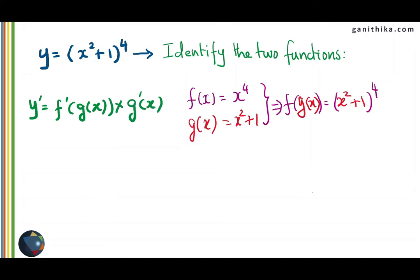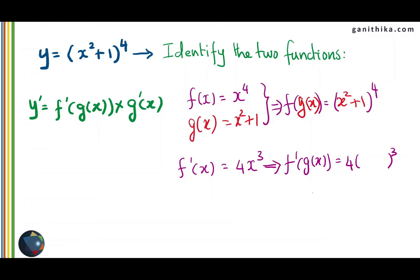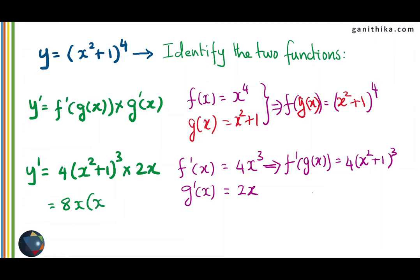Let us apply the chain rule. y dash equals f dash of g of x multiplied by g dash of x. The derivative of x to the power of 4 is 4x to the power of 3, but we need f dash of g of x. Plugging g of x into f dash of x, instead of x we write x square plus 1. Therefore, f dash of g of x is 4 times x square plus 1 to the power of 3, and the derivative of x square plus 1 is 2x. Substituting, we get 4 times x square plus 1 to the power of 3 multiplied by 2x, giving 8x times x square plus 1 to the power of 3, which is the derivative of x square plus 1 to the power of 4.